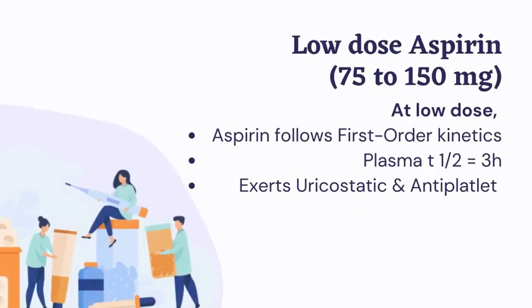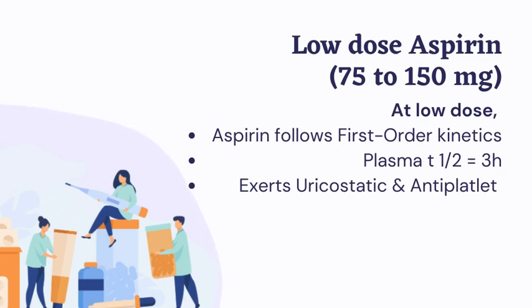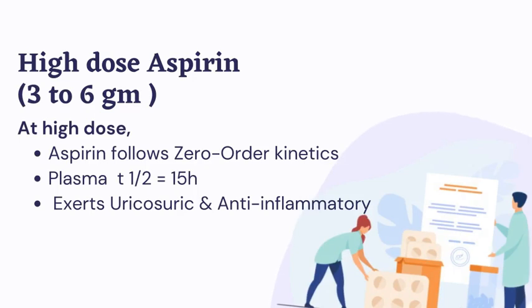Low-dose aspirin refers to dosages between 75 and 150 milligrams. At low dose, aspirin follows first-order kinetics and the plasma T-half is around three hours. At this dose, aspirin exerts cytostatic and antiplatelet effects.